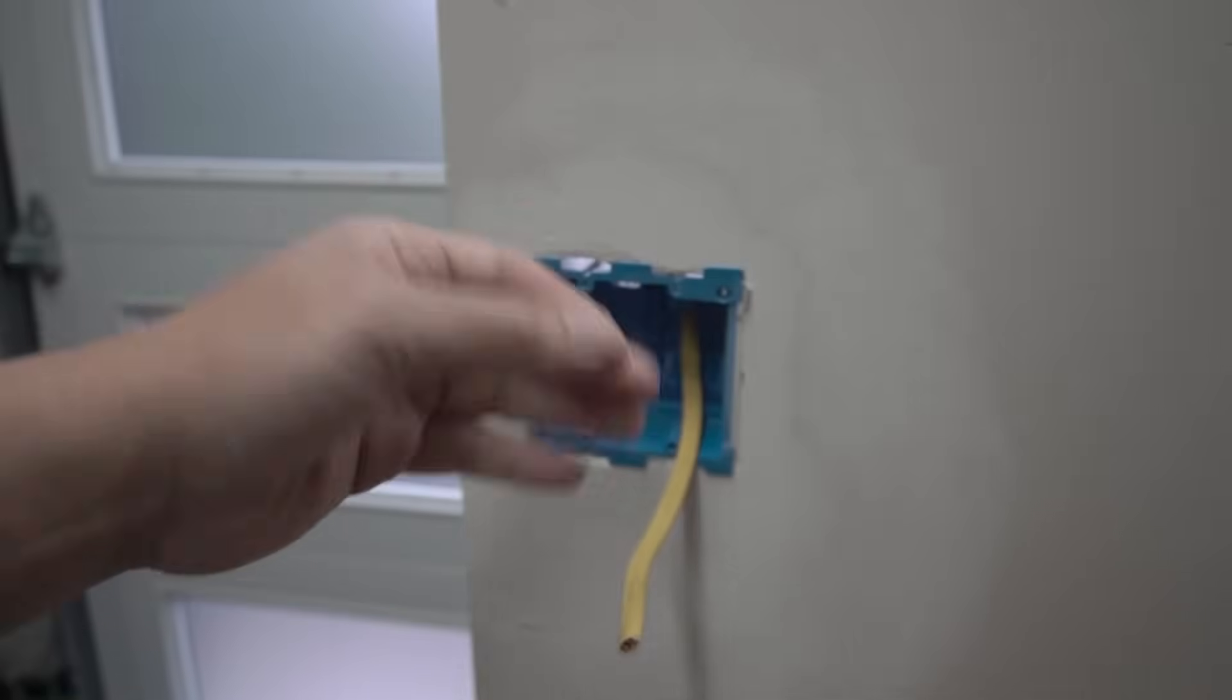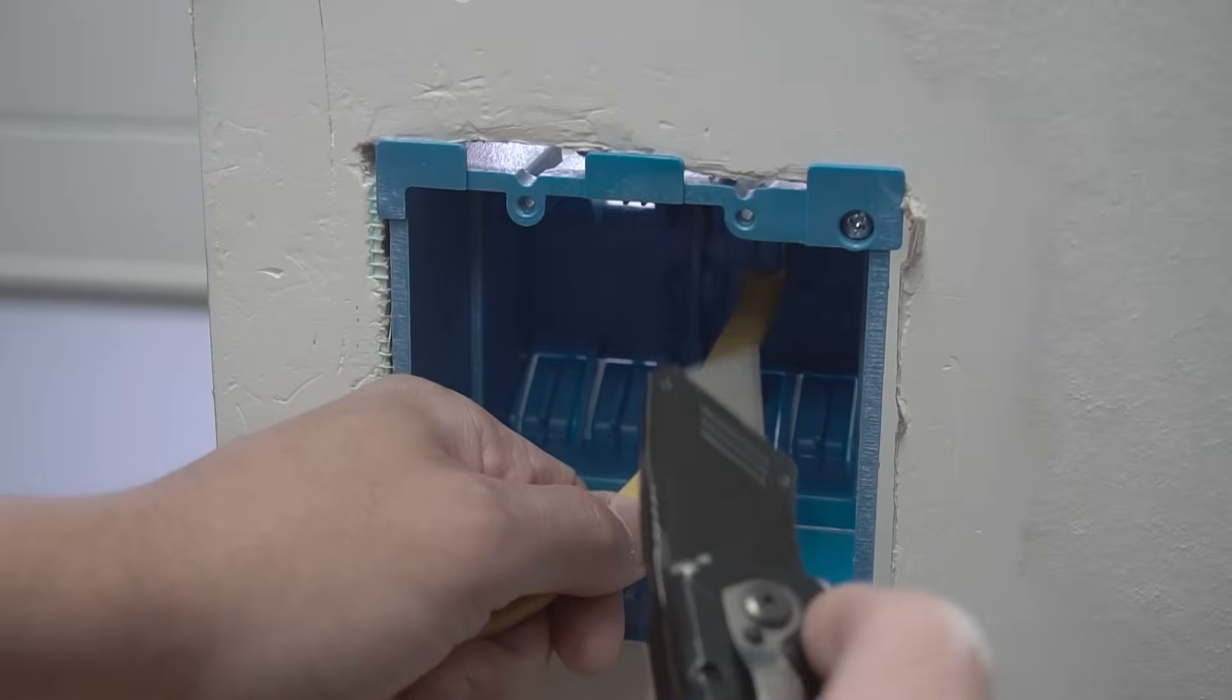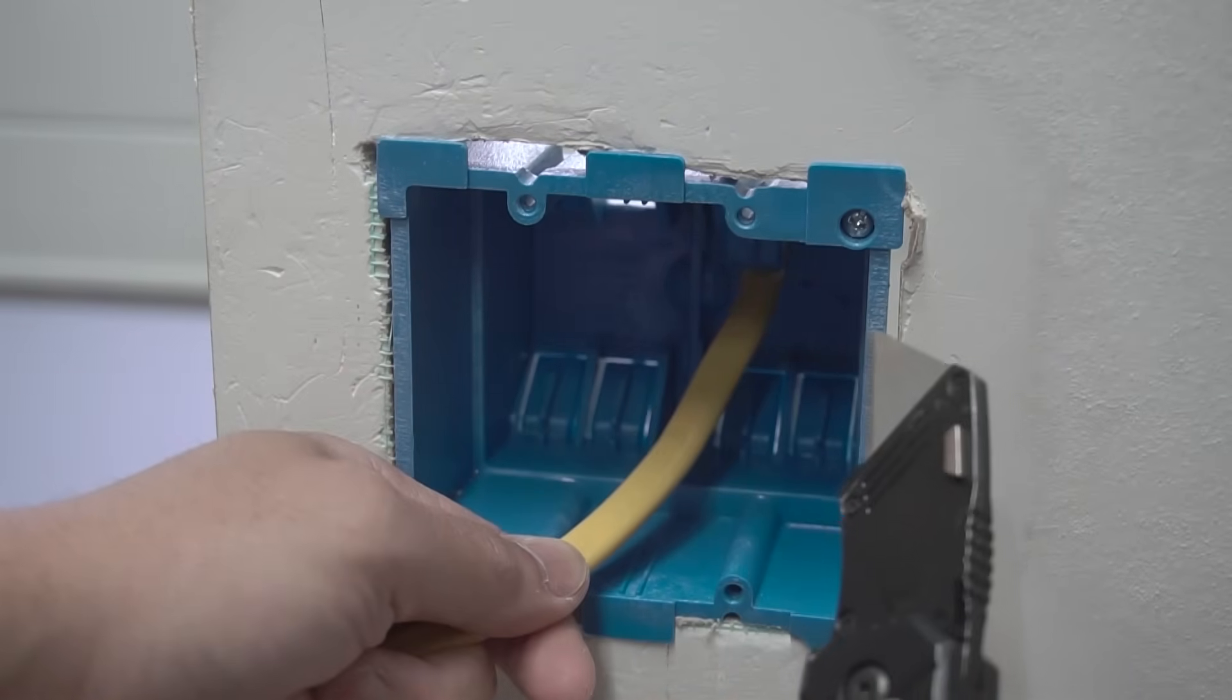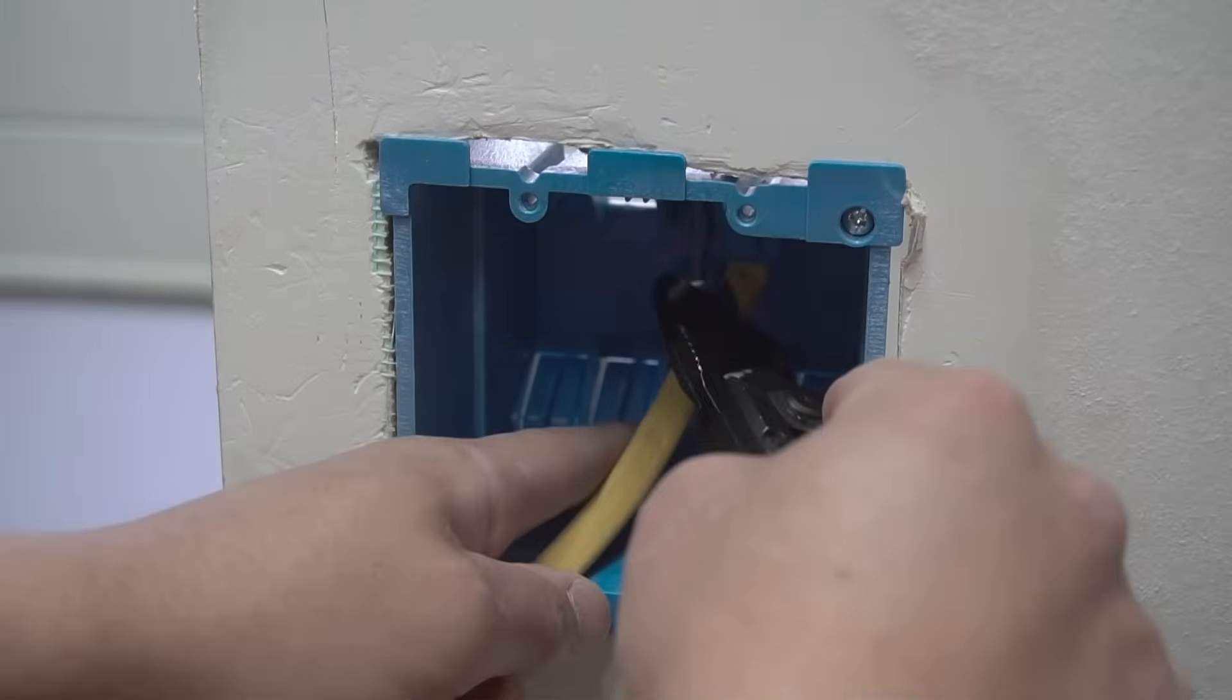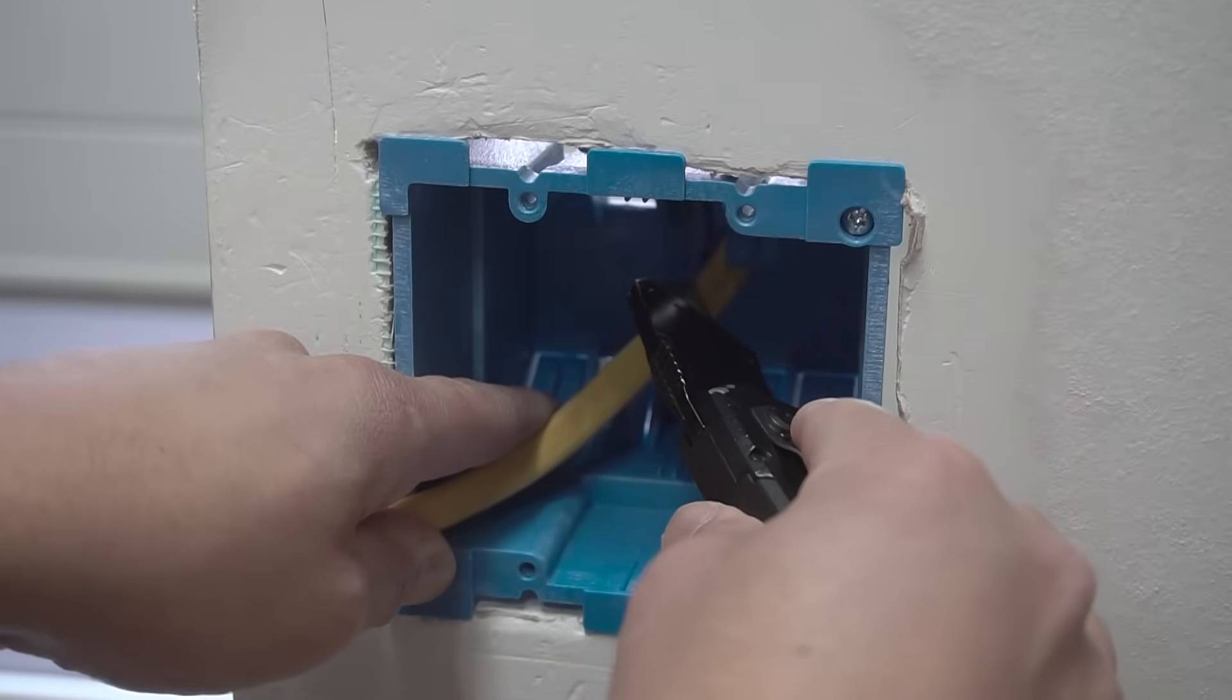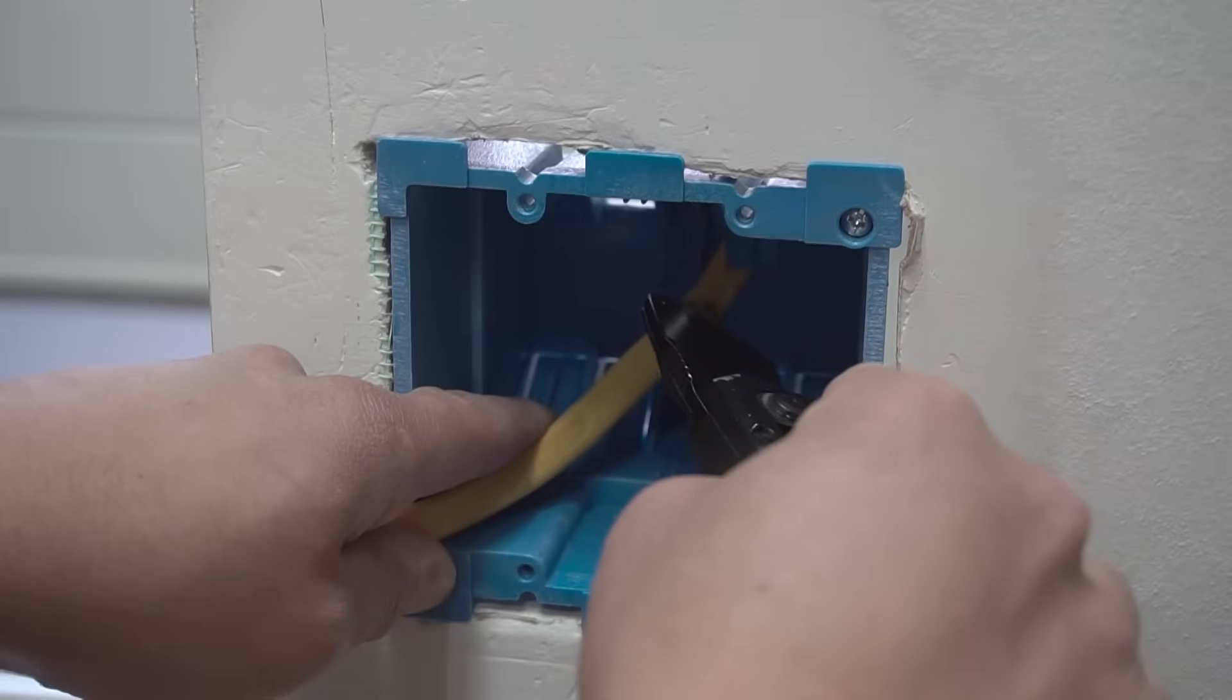Method number four is quite similar to method number three and you are going to be using your utility knife or box knife once again. So this might take a little bit of skill because you're going to be cutting on the top and then you're going to be cutting on the bottom as well. Maybe you can get away with just cutting at the top and then pulling, but what you're going to do is find the quarter inch exposure and you're just going to cut right here. You're just going to slice very carefully. Now having a nice sharp knife will make this job super easy and you won't be struggling to cut that off.